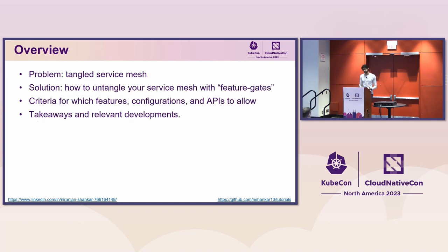First, I'm going to touch on the general problem of service mesh complexity and why users often end up with what I would call a tangled service mesh. Then I'll explain how to use feature gates to help solve this problem. After that, I'll discuss some helpful criteria to help you decide what kinds of features or configurations to allow or disallow in your environments. Finally, I'll conclude by reiterating some general takeaways and highlight some recent developments to watch out for.